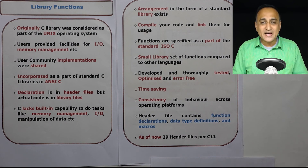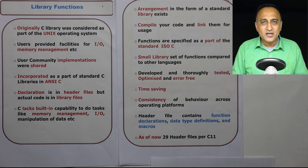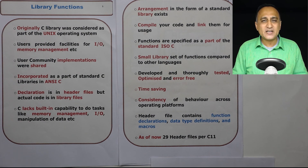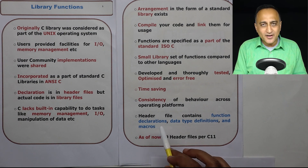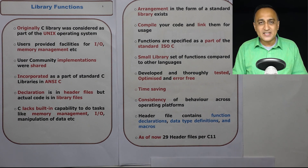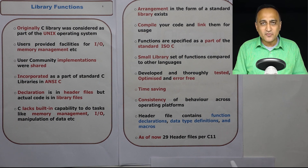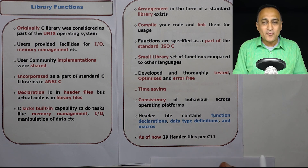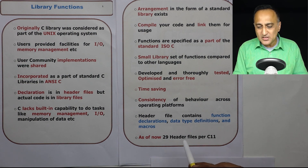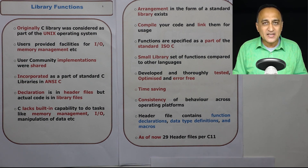As of now there are 29 header files in C11. Although if you look at the include directory in your compiler installation, there will be more than 29 because there are some non-standard header files provided by individual compilers. To clarify: the header file merely contains declarations of functions, declarations of global variables, constants, and data types that may be used during linking. Please do not think that there is any code present in the header file — only declarations are present in the header file.